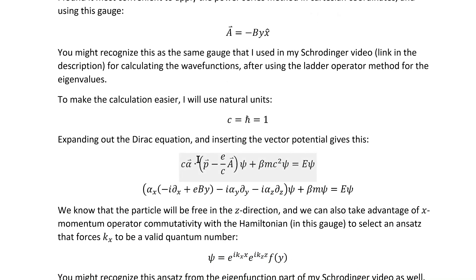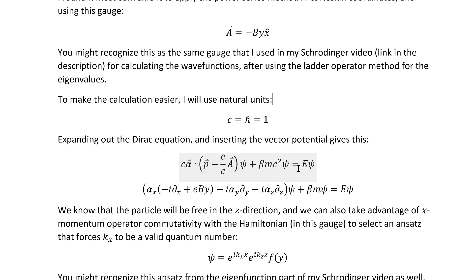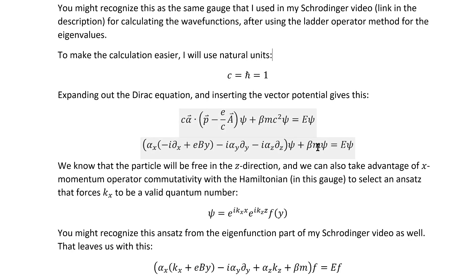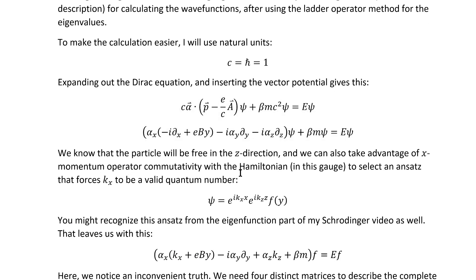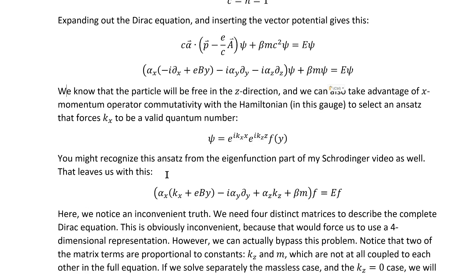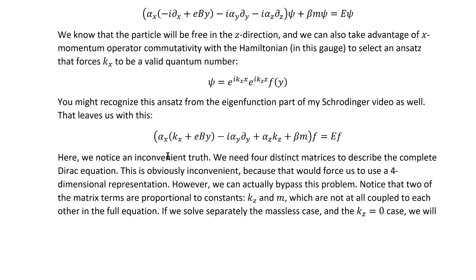This is the raw Dirac equation without the natural units imposed or the momentum operator formulas inserted. Doing that gets us straight to here. Now, we know the particle is free in the z direction, so we're going to have a phase factor for the z dependence in the wave functions. And we can also take advantage of x-momentum operator commutativity with the Hamiltonian, at least in this gauge, to select an ansatz that also forces kx to be a valid quantum number, meaning we include x-dependence with another similar phase factor. You might recognize this ansatz as well from my video on the Schrodinger analog of this problem.